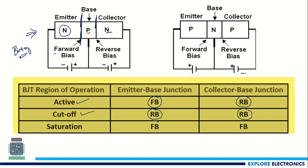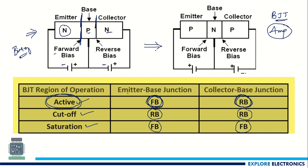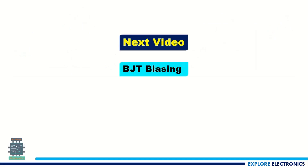When both the emitter-base junction and collector-base junction are forward biased, the transistor is in the saturation region. BJT can be used as an amplifier or as a switch. To use it as an amplifier, we keep the transistor in the active region by forward biasing the emitter-base junction and reverse biasing the collector-base junction. This rule applies for both NPN and PNP transistors. In the next video we will see different types of biasing and how to use the transistor as an amplifier. Thank you.